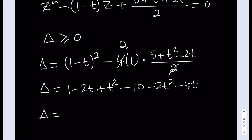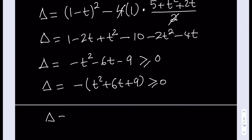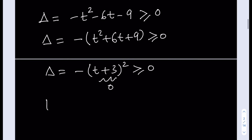The discriminant equals negative t squared minus 6t minus 9, and we need it to be greater than or equal to 0. Factoring out a negative 1 gives negative(t squared plus 6t plus 9), which is negative(t plus 3) squared. Since a square can't be negative, the only way this can be greater than or equal to 0 is if it equals 0 exactly — meaning t must equal negative 3.